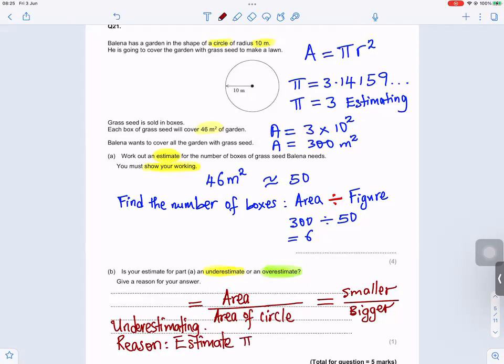The reason would be estimated pi to be 3, instead of 3.1419 and carrying on. So we estimated and made the area now to be smaller because we are multiplying by a smaller number now. Instead of 3.149, we multiply by three. So we made that one smaller. So that's how you do this type of question. I hope that helps.